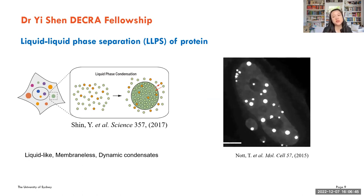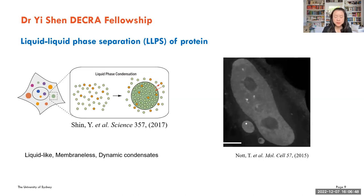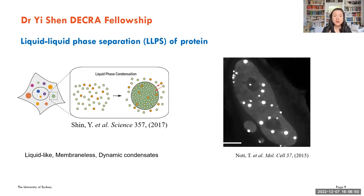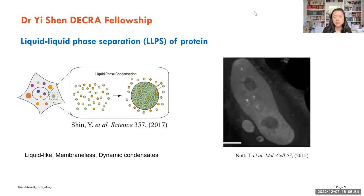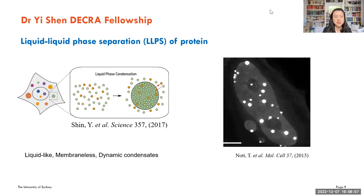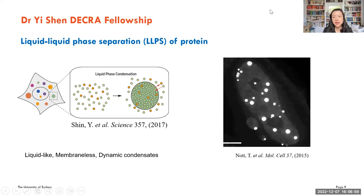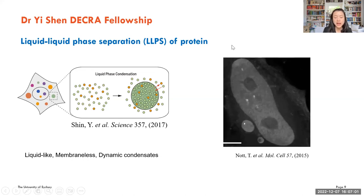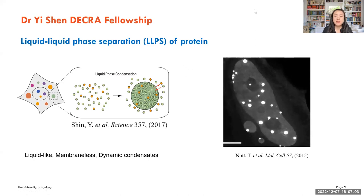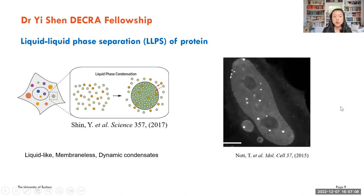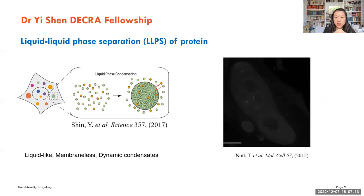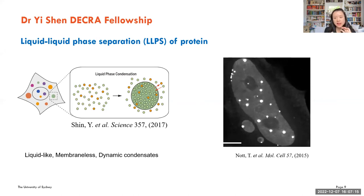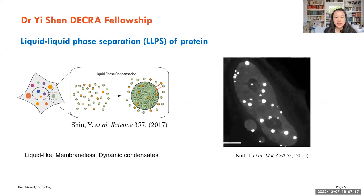Protein can interact with a lot of different biomolecules, and also with themselves. If they interact too much with themselves in cells it can cause big problems — diseases such as Alzheimer's or Parkinson's are actually caused by the aggregation of protein. This has been known for a long time, but recently people discovered that protein can also undergo liquid phase separation, forming spherical droplet-like condensates in cells, as you can see in this movie.